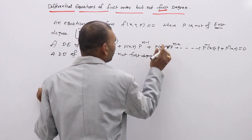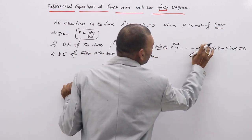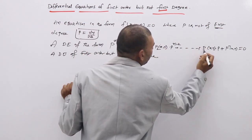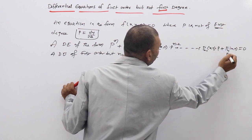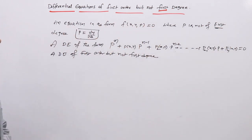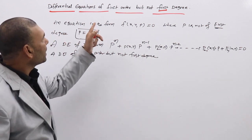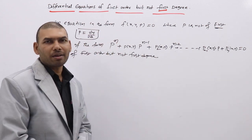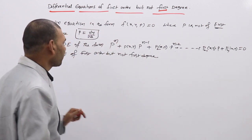Here you will get p², p^(n-1), and p^n — these types of differential equations we can easily identify as a DE of first order but not first degree.